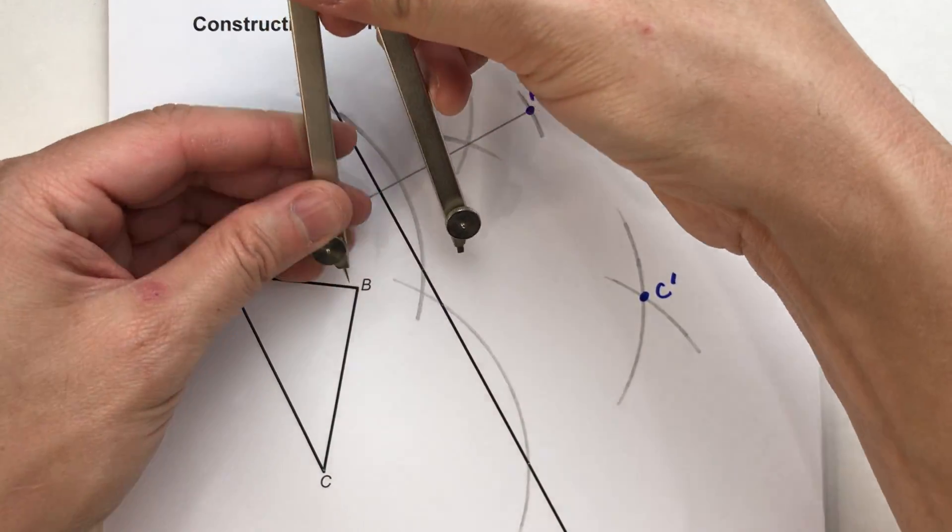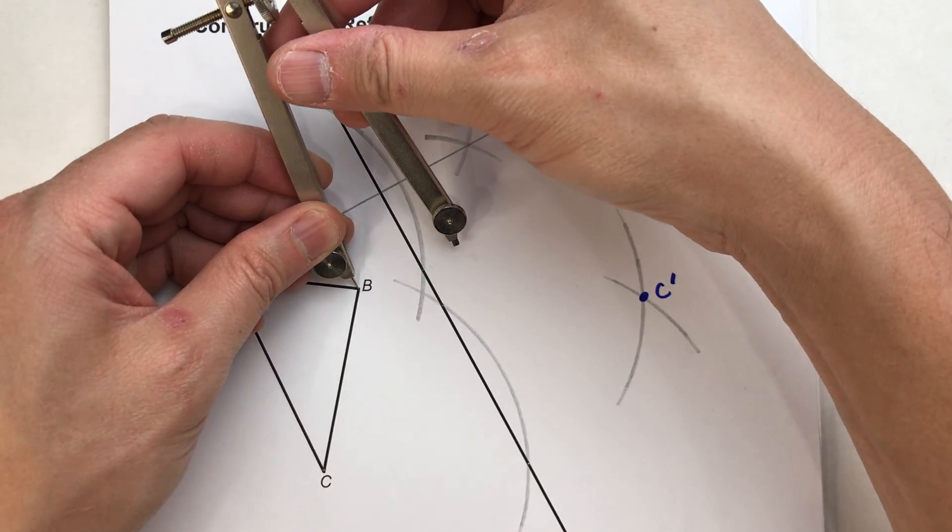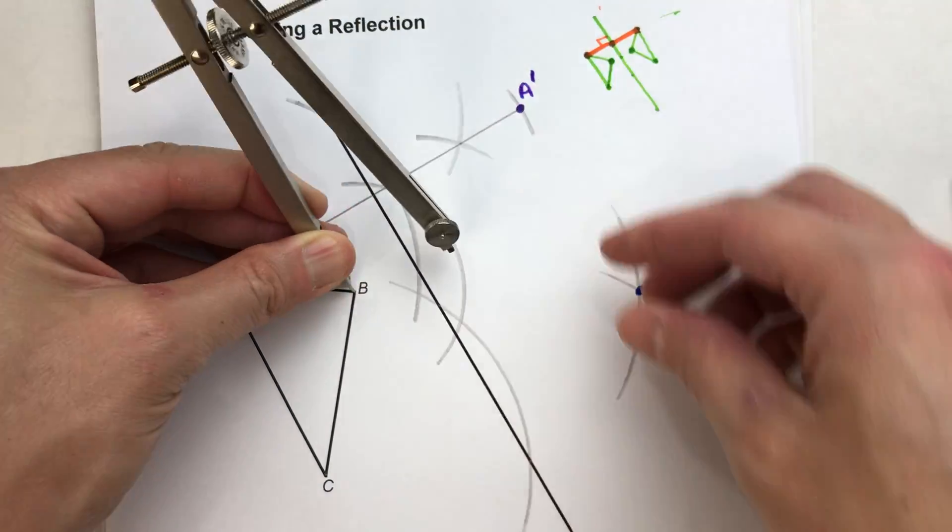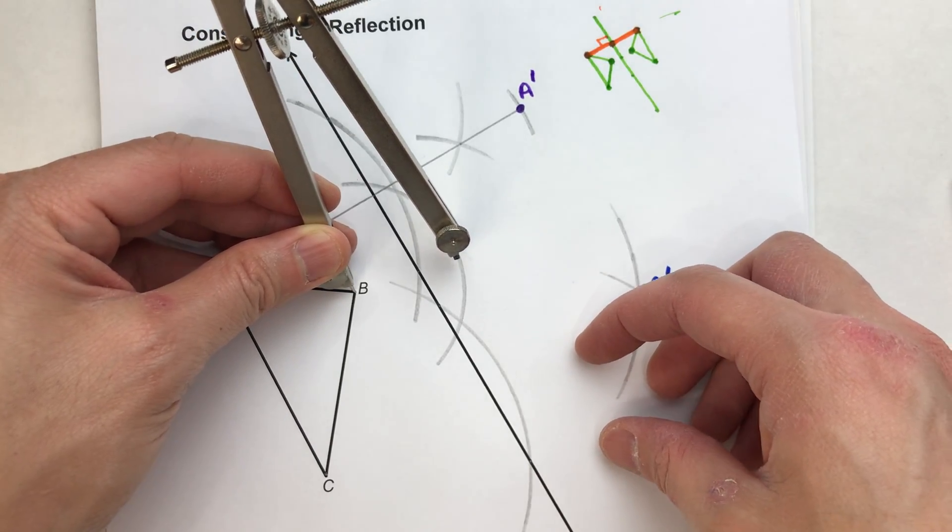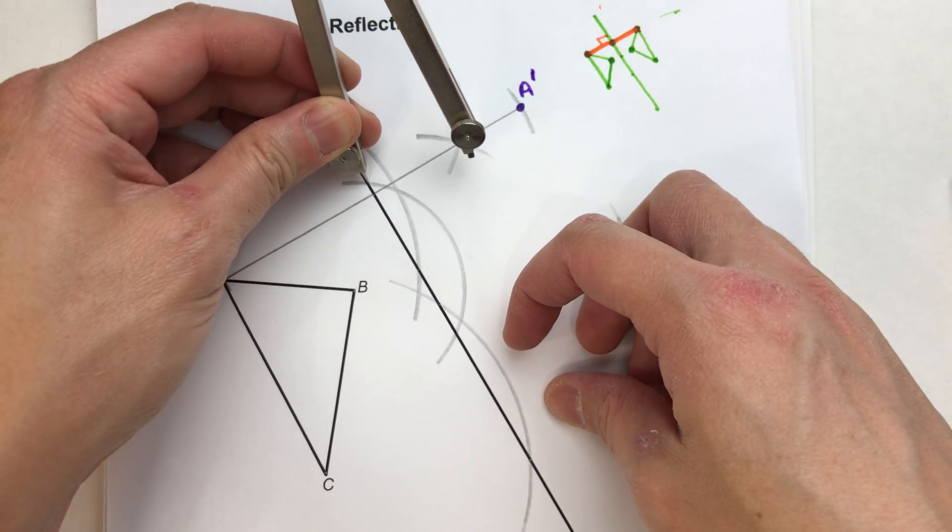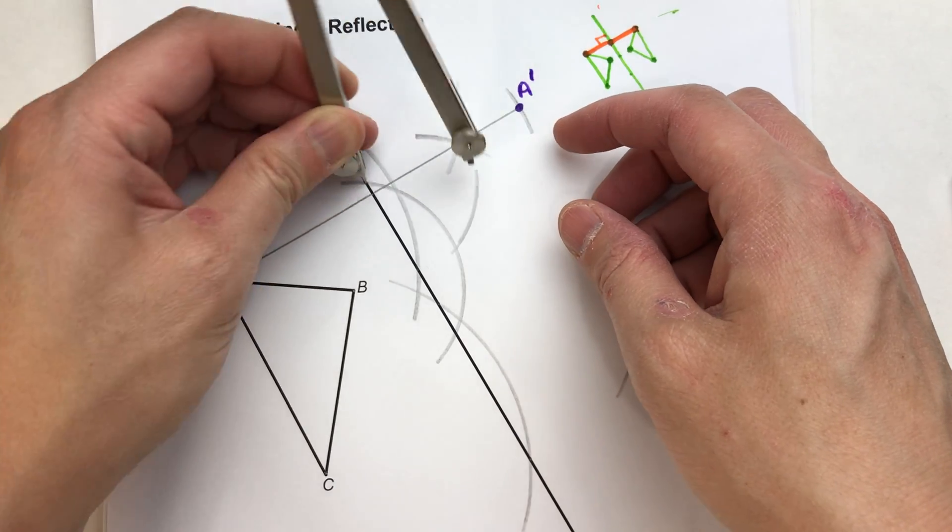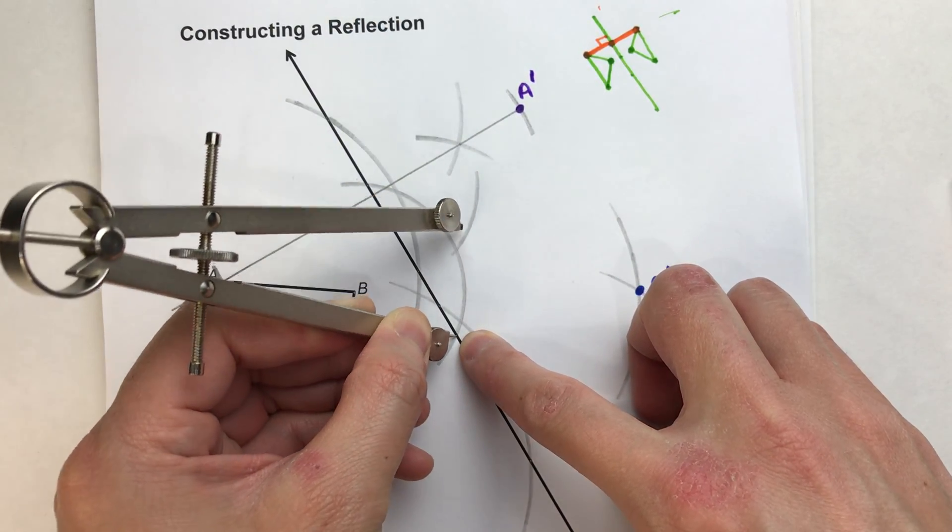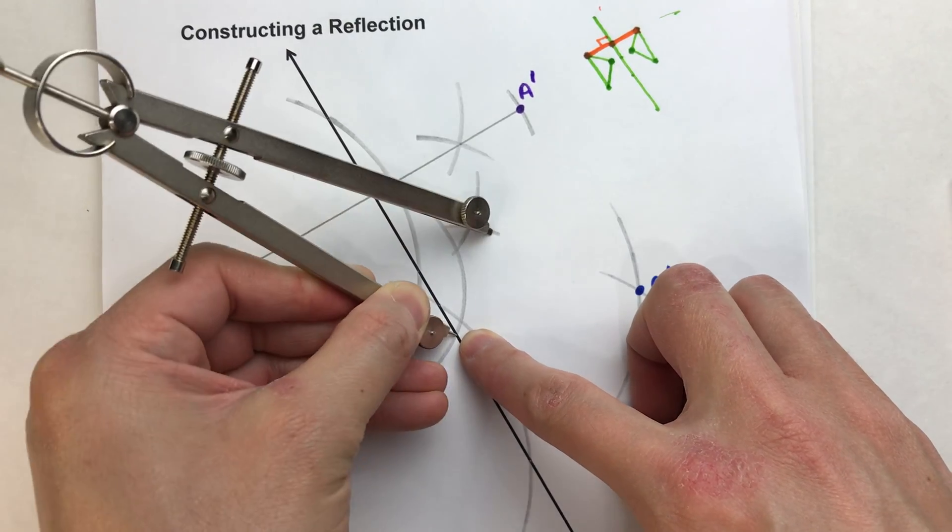So set my compass setting at least big enough to hit my line of reflection in two spots. Here we go. There we go. Keeping this same compass setting, I'm going to go where my arc hits my line of reflection. There's one arc where the arc hits the other side of the line of reflection. Swing another arc.